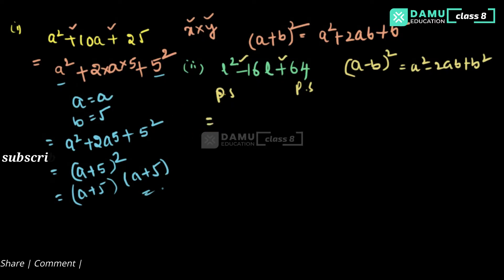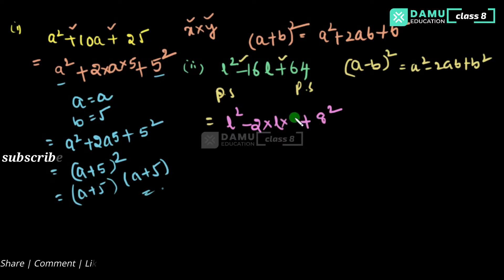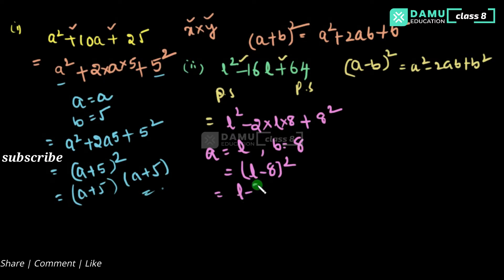The (a − b) whole square formula is a squared minus 2ab plus b squared. We write l squared as l squared, and 64 as 8 squared. So a equals l and b equals 8. Checking: 2 into 8 into l gives 16l — confirmed. So the answer is (l − 8) whole square, which equals (l − 8) into (l − 8).